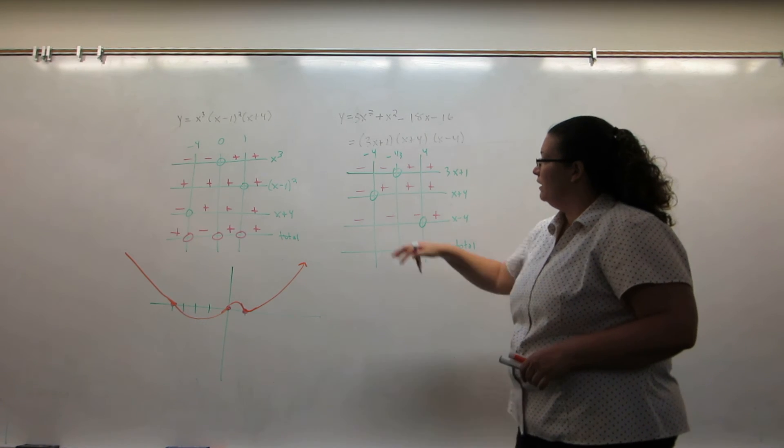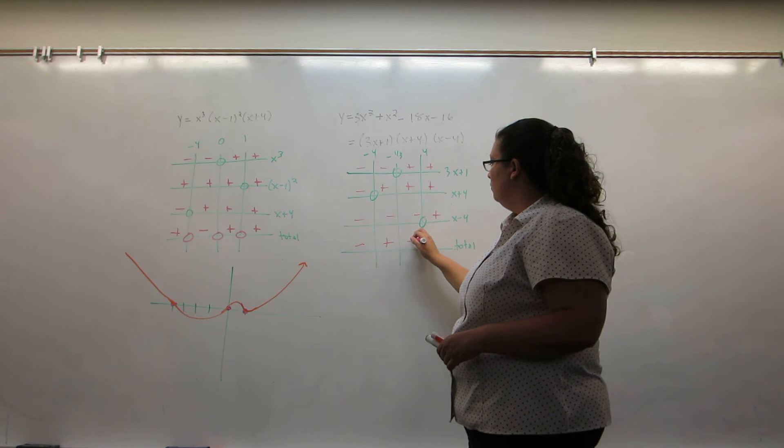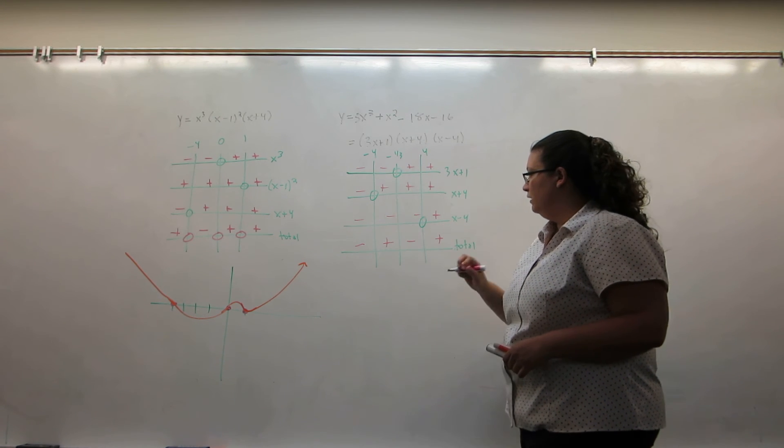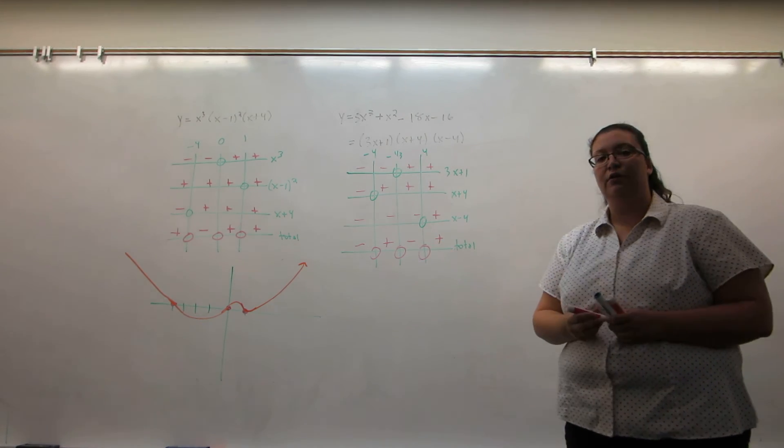Then we just have to multiply down. Three negatives, two negatives, one negative, no negative. And of course, zero times anything puts a zero on those lines.